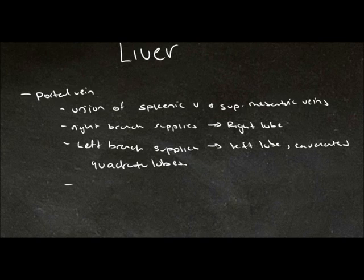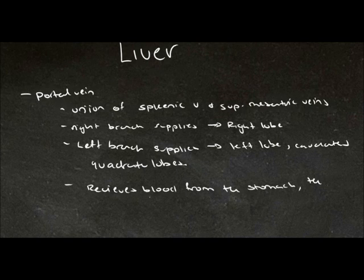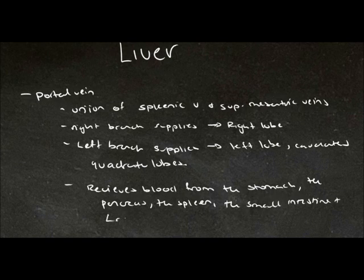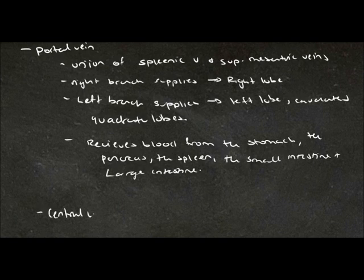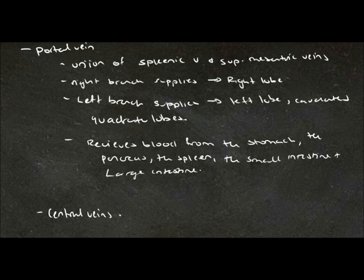The portal vein receives blood from a number of structures: the stomach, the pancreas, the spleen, the small intestine, and the large intestine. Central veins become hepatic veins, which join the inferior vena cava to return blood to the heart.